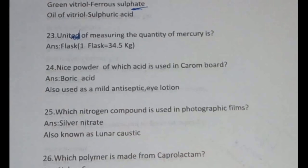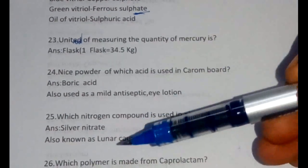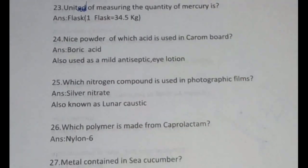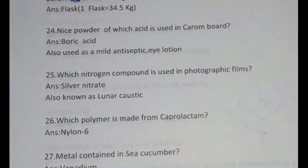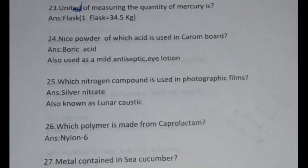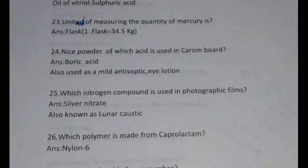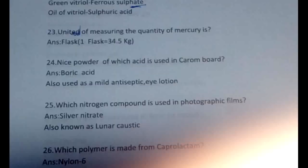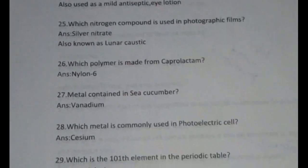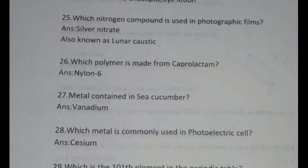Which nitrogen compound is used in photographic film? It is silver nitrate, also known as lunar caustic. Which polymer is made from caprolactam? It's nylon 6. Caprolactam can be made from Beckmann condensation — I have already discussed the reactions. The metal containing sea cucumber is vanadium.